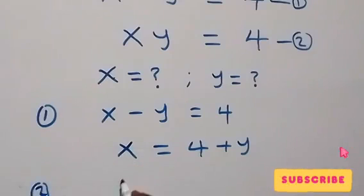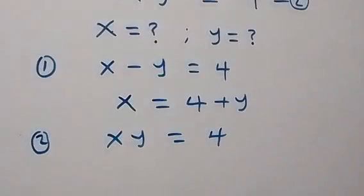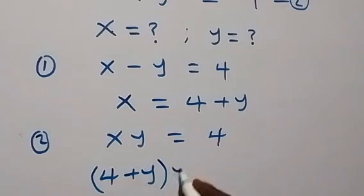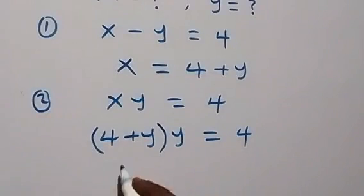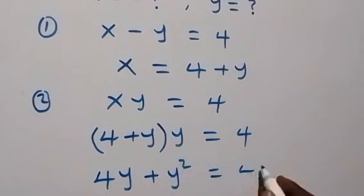That is, from equation 2, we have x times y equals to 4. Then it implies that here we have 4 plus y as x now, then times y equals to 4. Then here, we open the bracket with y and this becomes 4y plus y squared equals to 4.